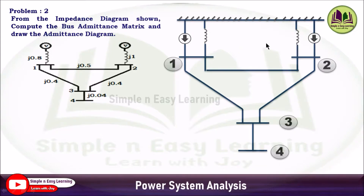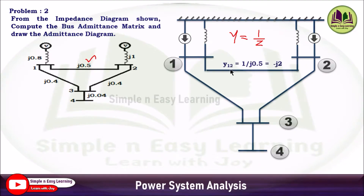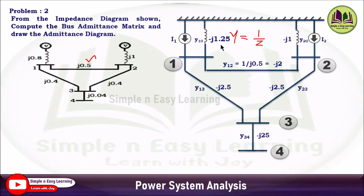Now we represent all the admittances. Admittance Y equals one divided by Z. Since the given diagram is an impedance diagram, taking the inverse of all the impedances gives the admittance values to enter in the admittance diagram. Starting with j0.5: Y12 = 1 / j0.5 = -j2. Similarly, 1 / j0.8 = -j1.25. In the same way, you can find the admittance values for all the remaining line elements.